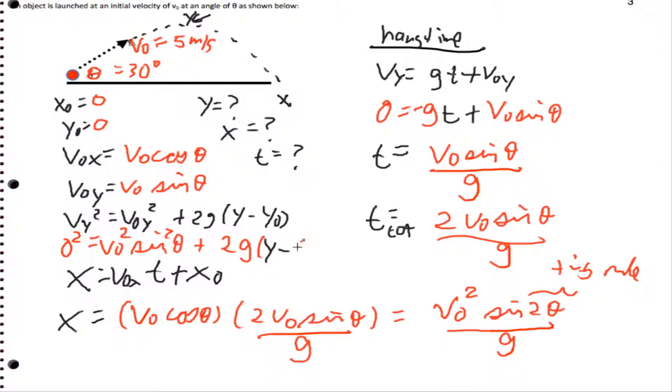And so I can actually go ahead and get my maximum height. When I do that, my maximum height actually works out to being y equals v0 squared sine squared theta all over 2g.